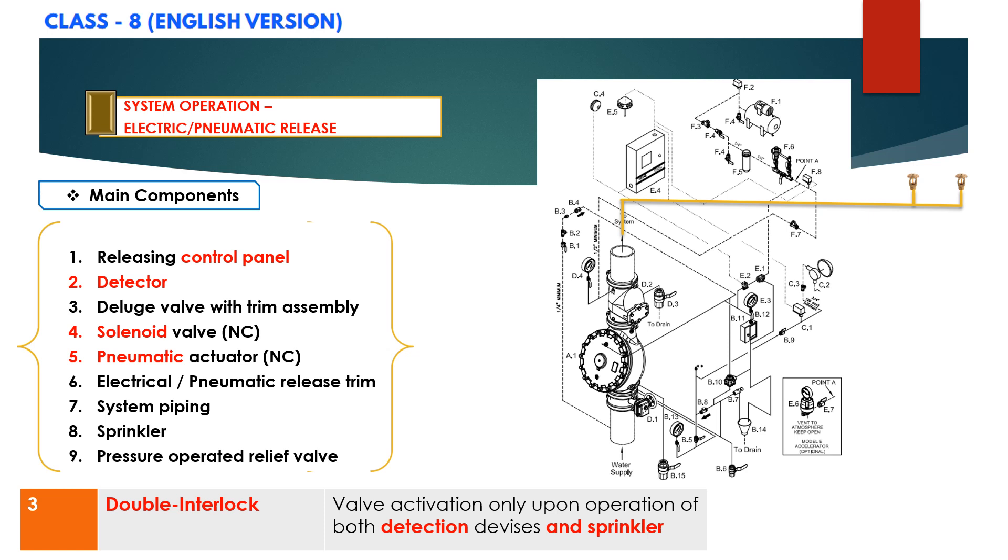Please note that the deluge valve A1 can only be reset after the system has been taken out of service and the outlet chamber of the deluge valve and associated trim piping are depressurized and drained.